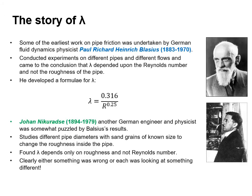Some of the earliest work on pipe friction was undertaken by German fluid dynamics physicist Paul Richard Heinrich Blasius. He conducted experiments on different pipes and different flows and came to the conclusion that lambda depended upon the Reynolds number and not the roughness of the pipe, and he developed a formula based on this.